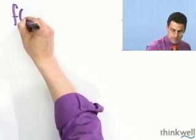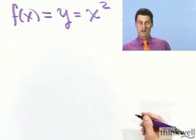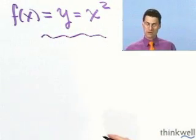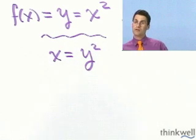So f of x, but again, I'm going to write that just temporarily as y equals x squared. So what do you do for the inverse? You just switch the roles. So x equals y squared. And now you want to solve for y.